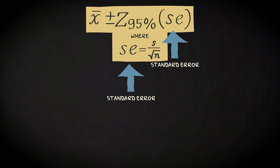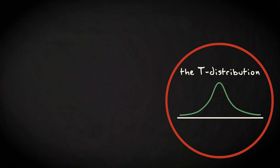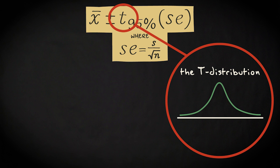For that reason, we employ another distribution instead of the standard normal distribution, also called the z-distribution we employed previously. Because of the extra error, we now use the t-distribution. That leads to this formula: x-bar plus and minus the t-score for the 95% confidence level times the estimated standard deviation of the sampling distribution of the sample mean.